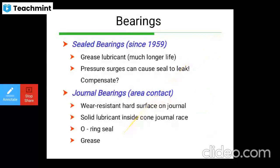Sealed bearings have been used since 1959, using grease lubricants for longer life. Journal bearings use area contact with a wear-resistant hard surface on the journals, solid lubricant inside the cone journal, and O-ring seals and greases.